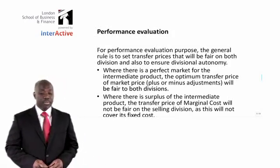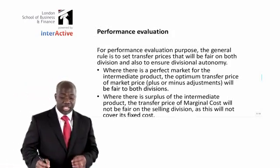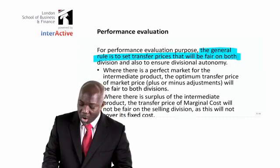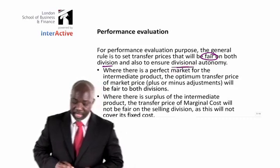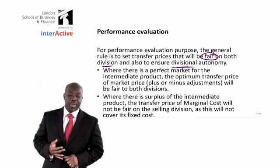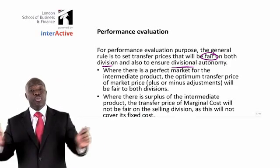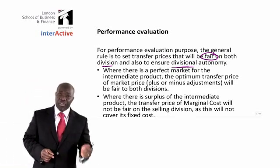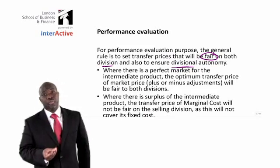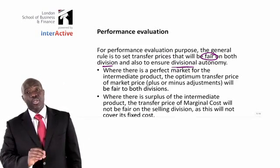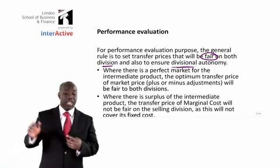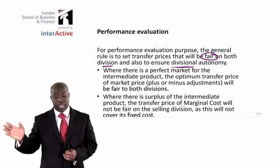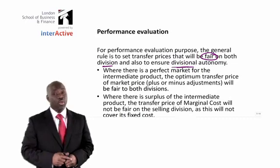When it comes to performance evaluation purposes, the general rule is to set a transfer price that will be fair to both the selling and the buying divisions. For performance evaluation, we should look at a transfer price that is fair to both divisions and will also ensure divisional autonomy. Bear that in mind because most exam questions will be based on performance evaluation purposes. Let's pick up the three scenarios and discuss whether the optimal transfer price is fair to both parties and ensures divisional autonomy.